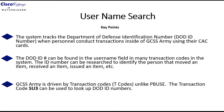The first key point is that the system tracks the Department of Defense identification number when personnel conduct transactions inside of GCSS Army using their CAC cards. The second key point is that the DOD ID number can be found in the username field in many transaction codes within the system.